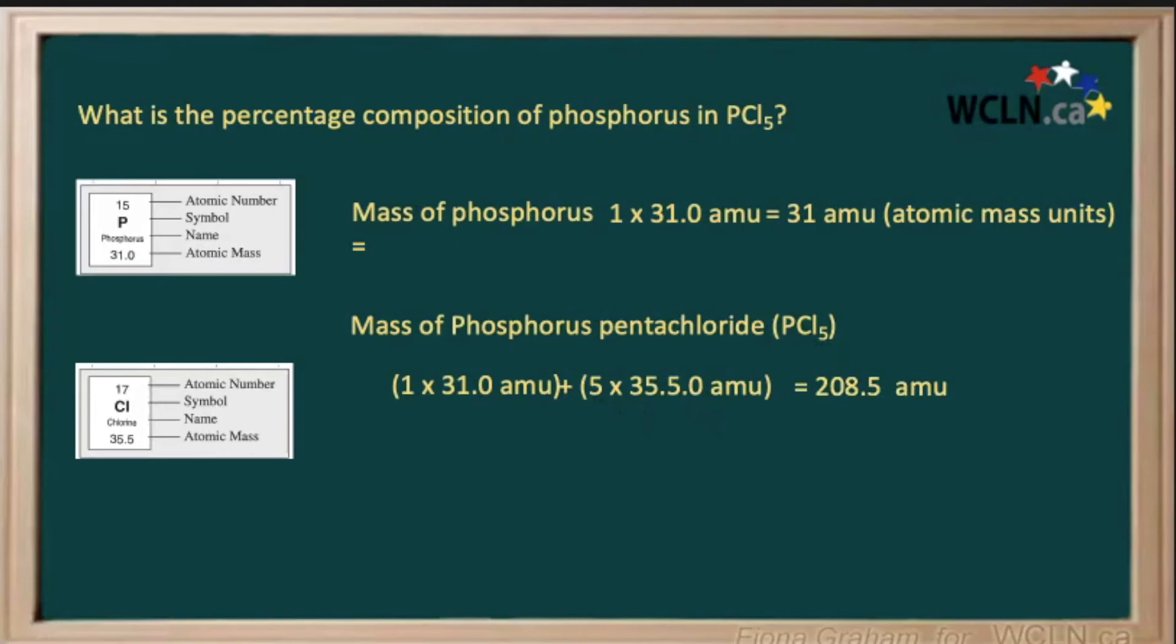To find the percentage composition by mass of phosphorus in our compound, we calculate the ratio of our phosphorus mass to the mass of our whole compound. Doing that calculation, we have 31 divided by 208.5, giving us 0.1486. Now we multiply that by 100 to get the answer as a percentage. Our final answer is about 14.9% when rounded to one decimal place.